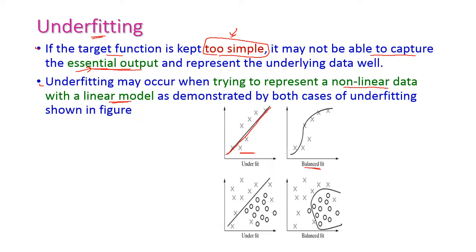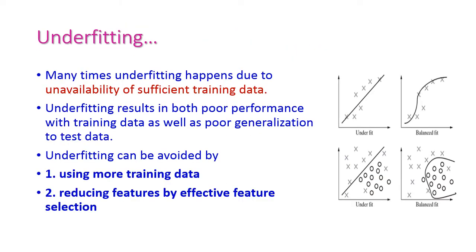The balanced fit is the original correct fit, which should be represented as non-linear. But in underfitting, the target function is a linear function, meaning all data below the line is one class and above the line is another class — which gives the wrong result. The original result should look like the balanced fit. Underfitting also happens due to unavailability of sufficient training data; if the training data set is very small, underfitting occurs.